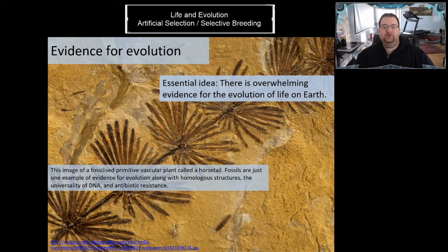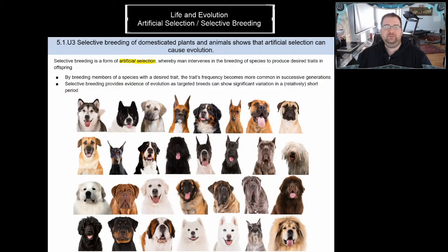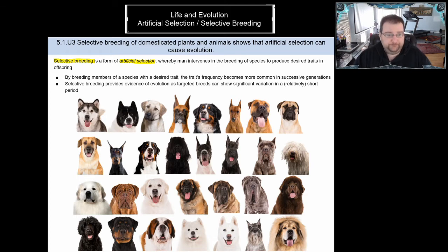Hello everybody, and welcome to another episode of Science with Mr. Eamont. Today we are going to be continuing to learn about the evidence of evolution, and we are going to be focusing on selective breeding and artificial selection — words that are often used interchangeably.